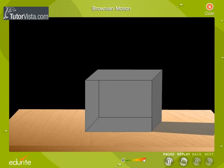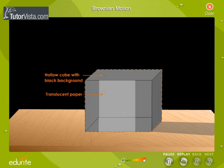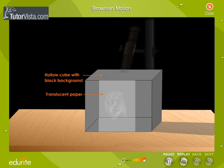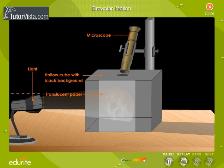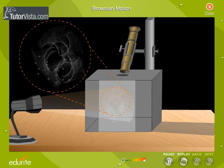Let us now understand Brownian Motion with the help of an experiment. A hollow cube is filled with smoke particles and is placed under a low-power microscope. Simultaneously illuminate the cube with a light source. The smoke particles appear as bright particles moving in all possible directions in contrast to the black background. This is an experimental evidence of molecular motion or Brownian motion.